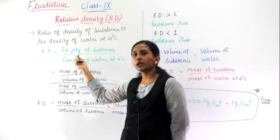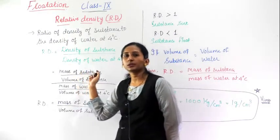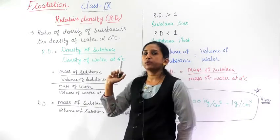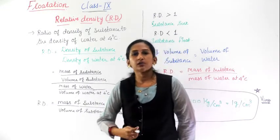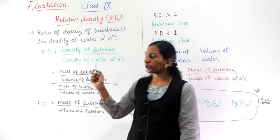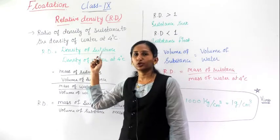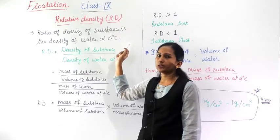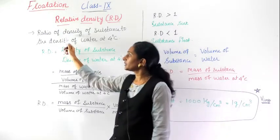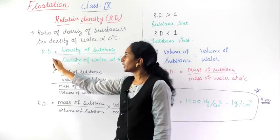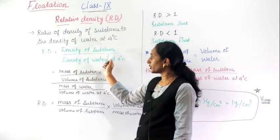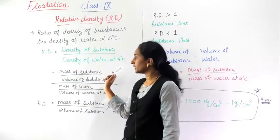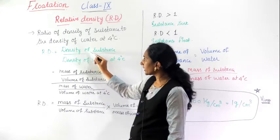Relative density is the ratio of the density of a substance to the density of water at four degrees Celsius. We use four degrees Celsius because at that temperature, water shows its maximum density. So, relative density (RD) equals the density of the substance divided by the density of water at four degrees Celsius.